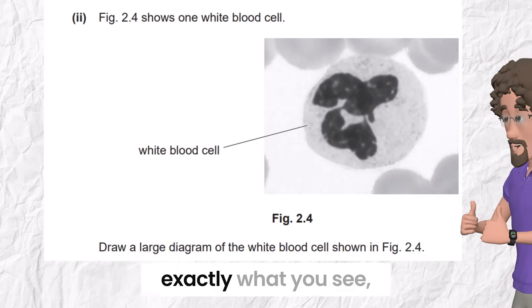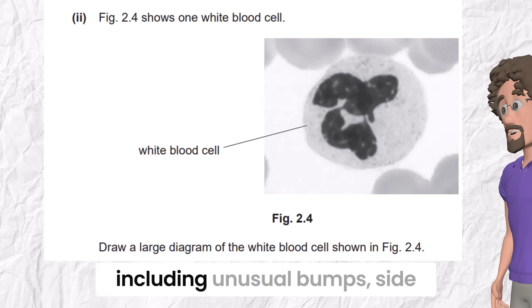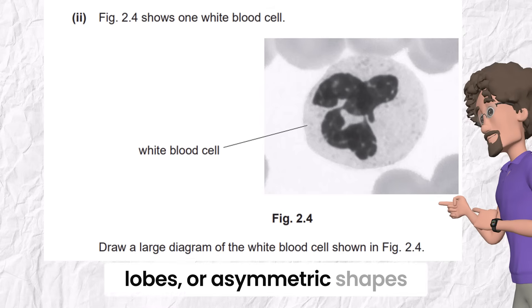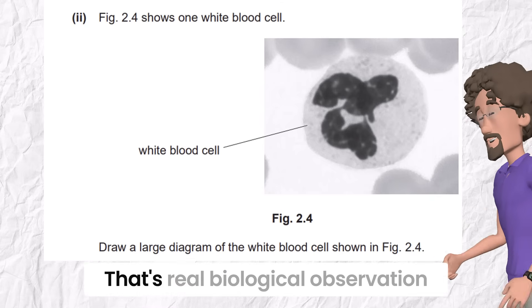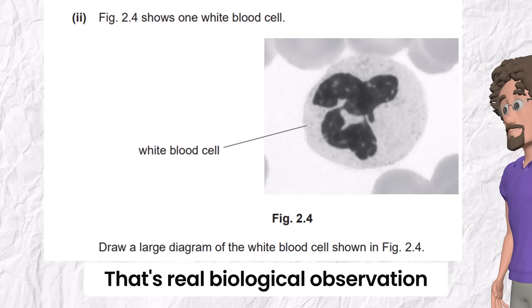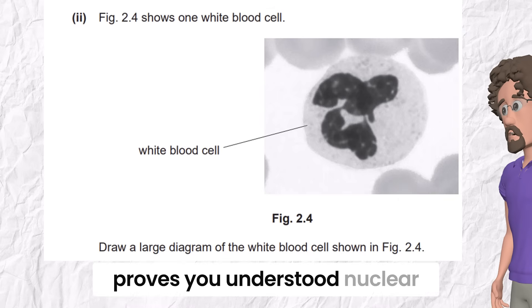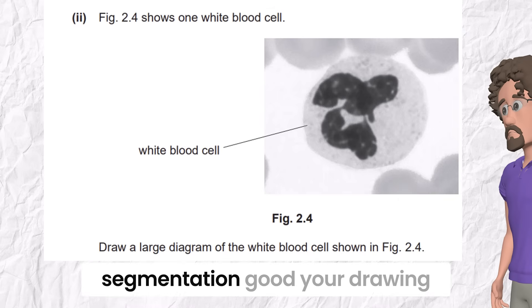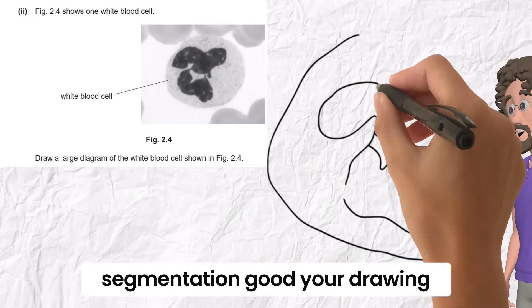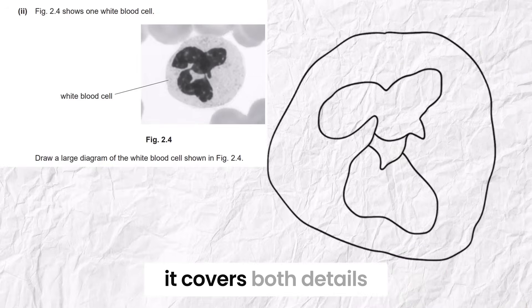The examiner isn't asking you to draw a textbook neutrophil. They want to know if you can copy exactly what you see, including unusual bumps, side lobes, or asymmetric shapes. That's real biological observation. The second mark is about drawing a thin line joining lobes on both sides. This detail proves you understood nuclear segmentation. Good. Your drawing might appear like that. It covers both details.